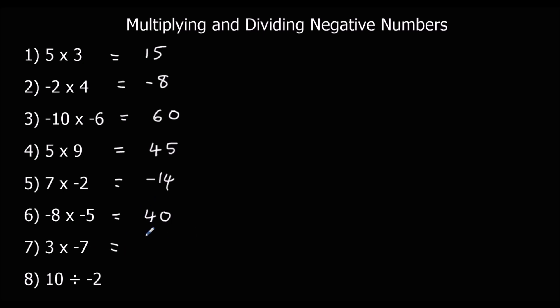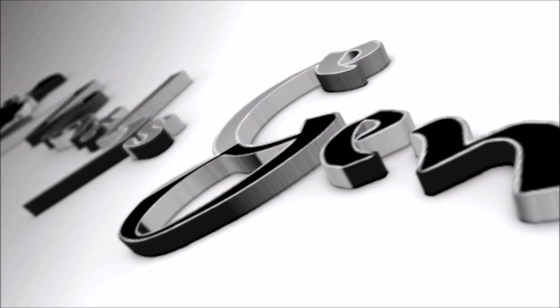3 times 7 is 21 — a positive times a negative is a negative. And 10 divided by negative 2 is 5 — a positive divided by a negative is a negative.